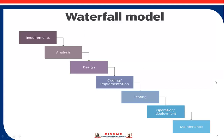The next is the testing phase. Once the software is completed, it is deployed in the testing environment. The testing team starts testing, either manually or using automated testing. Testing is done to verify that the entire application works according to the customer requirements. During this phase, the testing team may find defects which they communicate to developers. The development team fixes the defects and sends them back to testing for retest. This process continues until the software is working according to the business needs of the system.